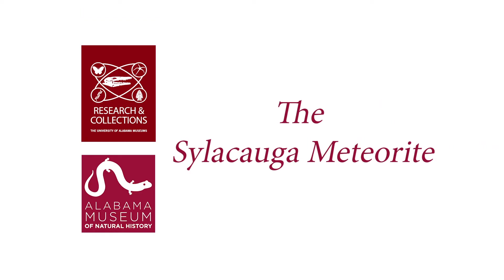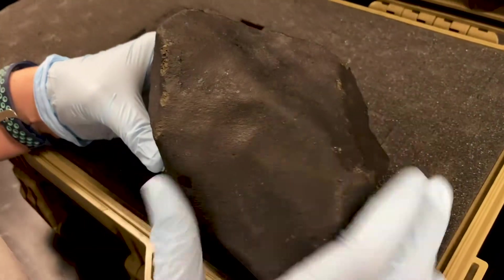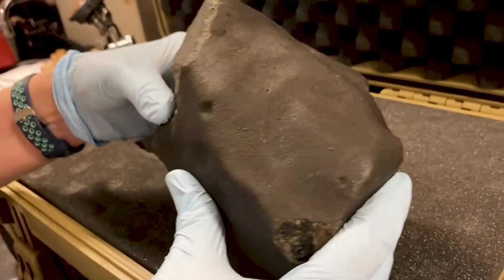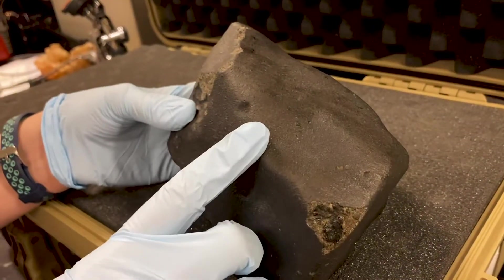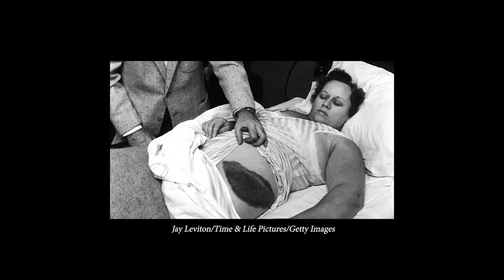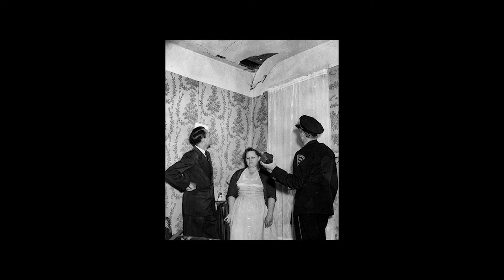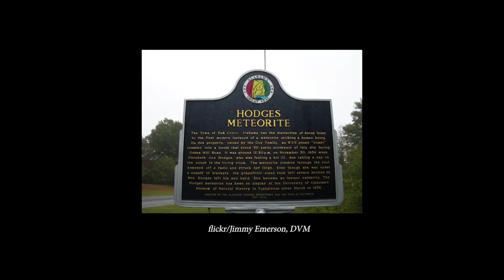Right now I have been having a quick look at Sylacauga. When we find a meteorite we usually name it after the place that it was found. So in that case the Hodges meteorite, even though it actually hit Mrs. Hodges and was found in the Hodges property, it's actually given the designation Sylacauga because that is the name of the town in which it was found.